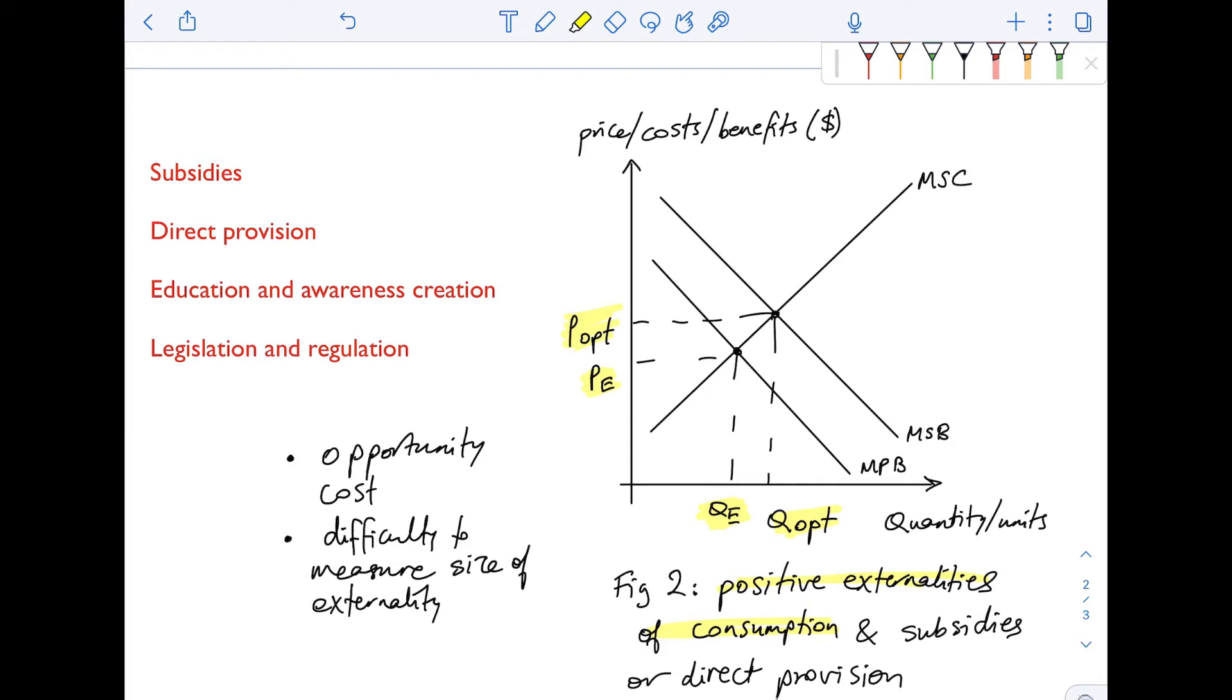So here, the government can also make use of subsidies and direct provision, as well as legislation and regulation, but it can also make use of education and awareness creation. And both of them will affect the diagram differently. So subsidies and direct provision, even though the initial split is on the demand side.